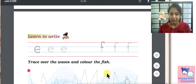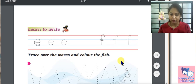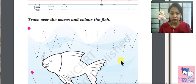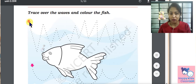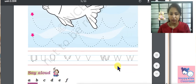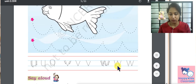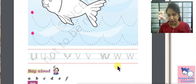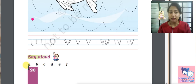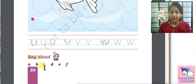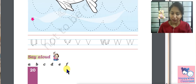Learn to write E and F letter. Trace over the waves and color the fish. Join the dots. Say aloud. This is letter A B C D E F. These are the small letters of the alphabet.